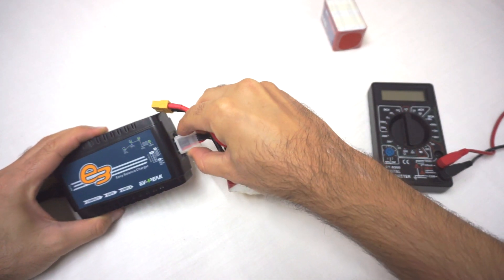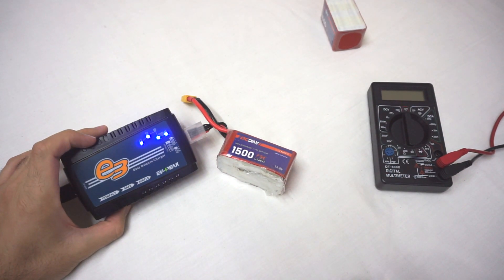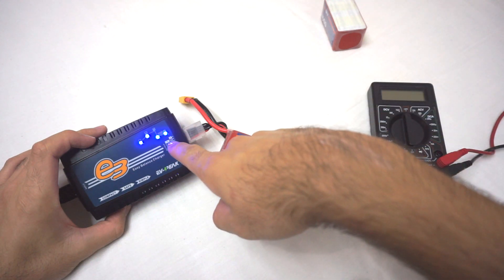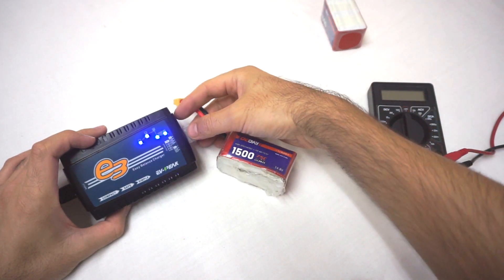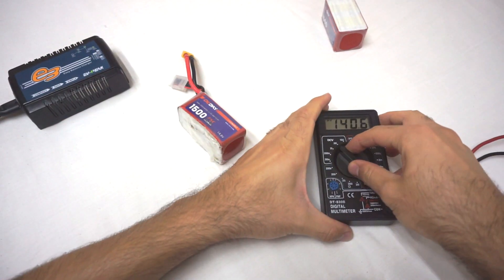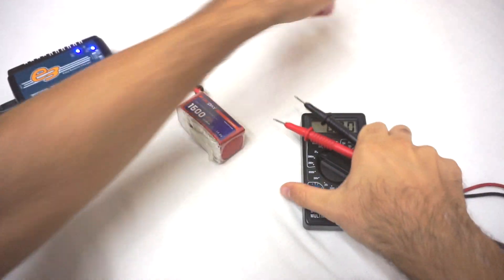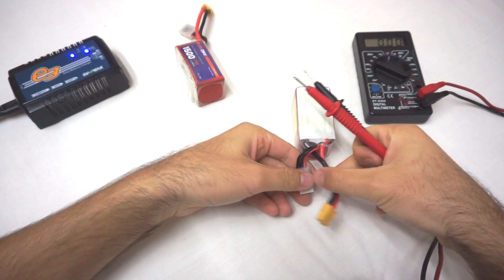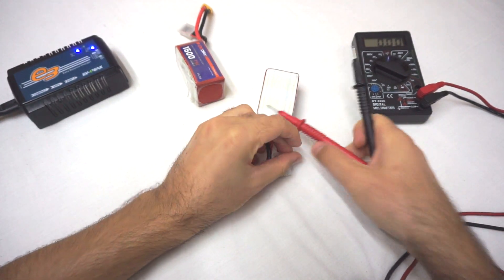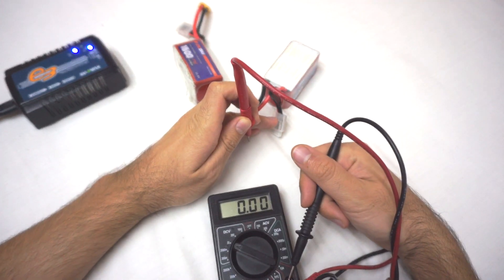And we should measure the voltage of the cells. It's blinking. Okay, so let's see. Let's measure the good battery using the balance plug. Make sure it's not on amperage.